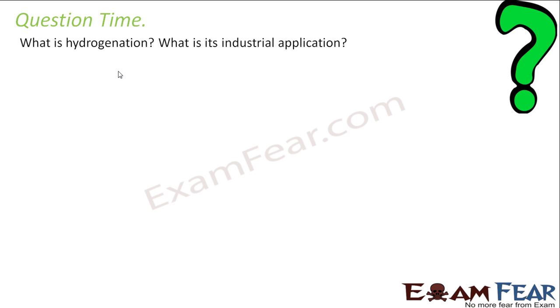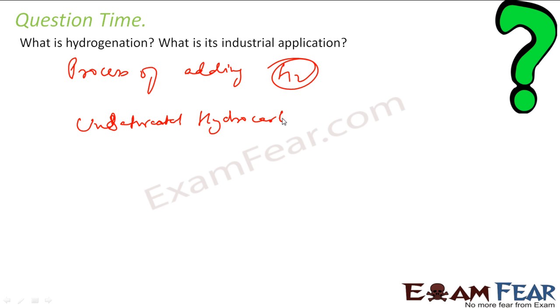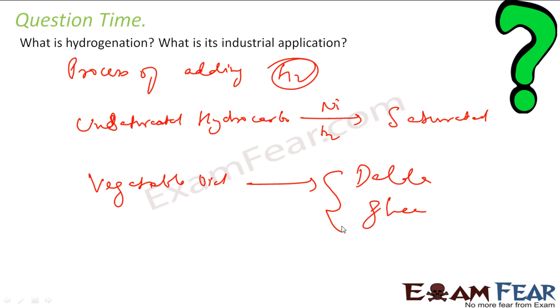What is hydrogenation? What is the industrial application? Hydrogenation is nothing but the process of adding hydrogen to something. You have unsaturated hydrocarbon. You add hydrogen on nickel catalyst. You add hydrogen to this, so it becomes saturated. This process is called hydrogenation. And in industry, we have vegetable oil which is converted to dalda or ghee using hydrogenation.